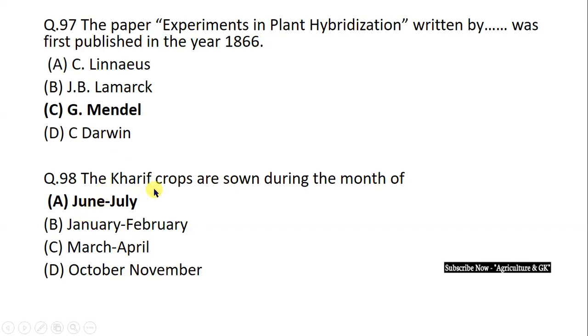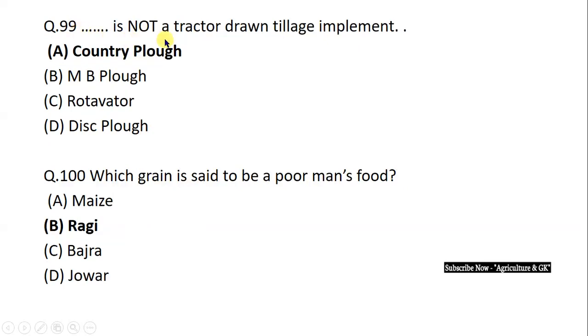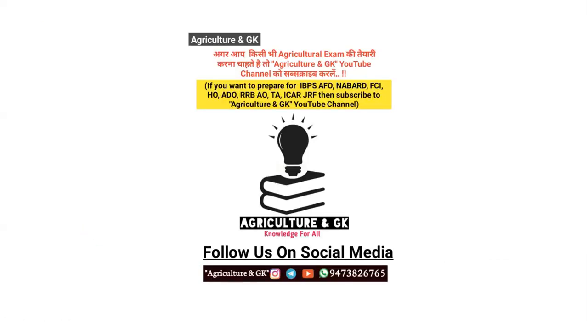The Kharif crops are sown during the month of June-July. Country plow is not a tractor-drawn tillage implement. Country plow is the hal that we use with bullocks. Which grain is said to be poor man's food? The answer is ragi. Thank you for watching this video. Hope you all liked this video. Please like and share as much as possible. Stay healthy and safe.